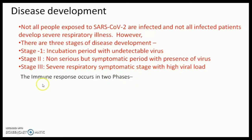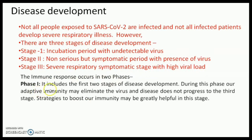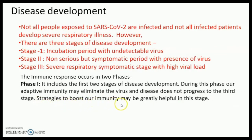The immune response occurs in two phases. Phase 1 covers the first two stages of the disease — the incubation period as well as the symptomatic period when the virus has not yet caused very serious symptoms. During this phase, our adaptive immunity may eliminate the virus and the disease does not progress to the third stage. Strategies to boost immunity may be very helpful at this stage.